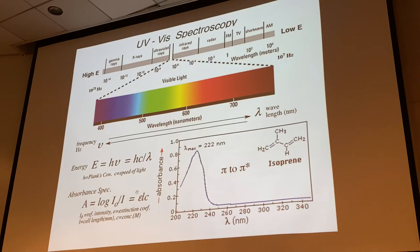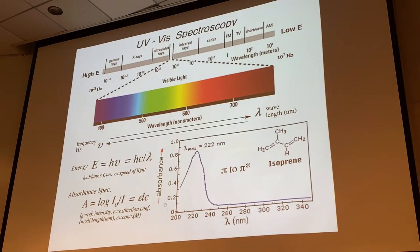Then we have Beer's law, absorbance, and the extinction coefficient or absorptivity - you don't need to know the details there. Here we're talking about the HOMO to LUMO excitation of molecular orbitals. Here's what a typical UV spectrum looks like for a polyene - isoprene, which we've worked with. This is the pi to pi* transition; the lambda max is 222 nanometers.